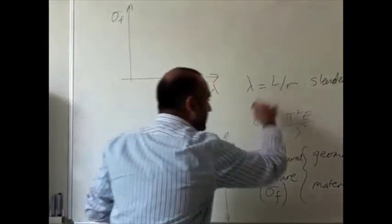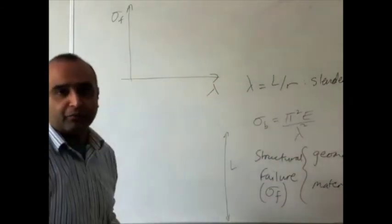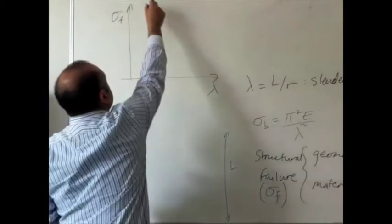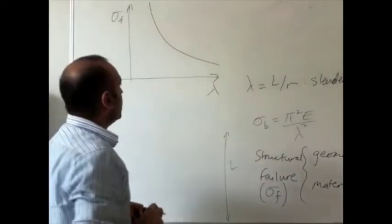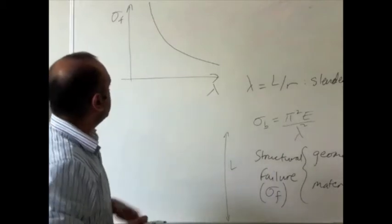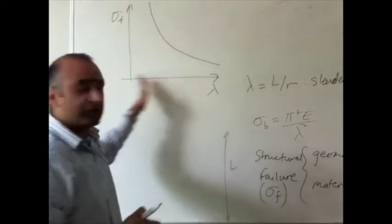Now if we take the buckling stress that we derived earlier from Euler, we end up with a curve called a hyperbola. Now, there's an issue with this curve in that it goes on to infinity when lambda goes to zero.